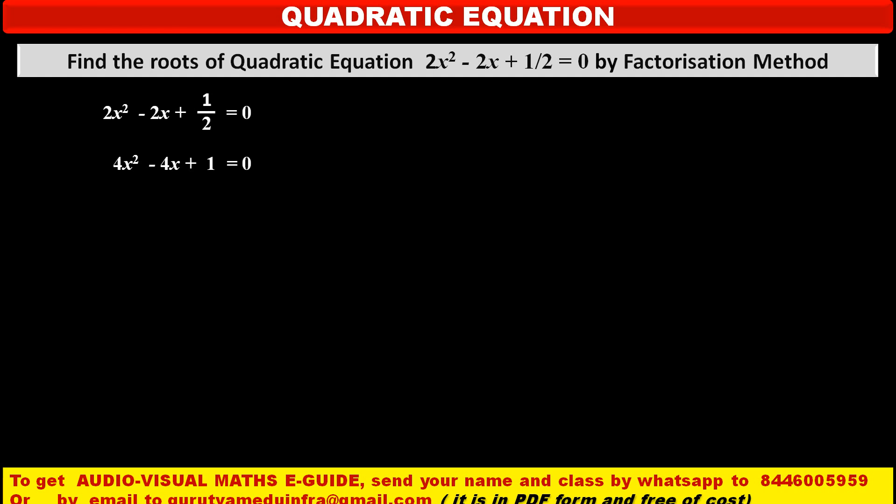Now, we have to factorize it. That means we have to split the middle term in two parts. So, first check the product of coefficient of x² and constant term. This product is 4 × 1 = 4. That means we want two numbers or two factors such that their product is 4, positive 4.